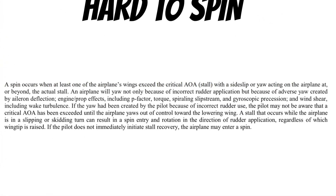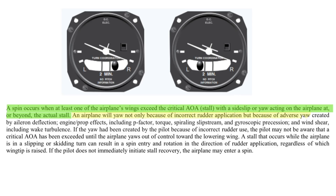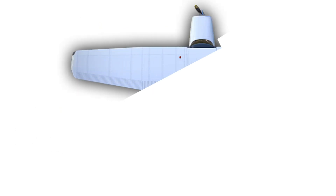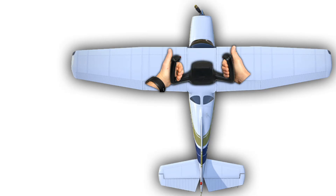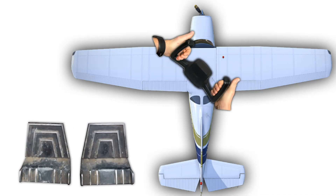Take a look at what the Airplane Flying Handbook says: 'A spin occurs when at least one of the airplane's wings exceeds the critical angle of attack, or stalls, with a sideslip or yaw acting on the airplane at or beyond the actual stall.' Now, they do go on to say that this yaw is not necessarily caused by using the rudder incorrectly — it can also be caused by not accounting for adverse yaw caused by the ailerons. That's why it's super important to always fly the aircraft as if the rudder pedals are tied to the ailerons, unless you're intentionally trying to slip the aircraft. Anytime you roll the airplane, you're creating more drag on the wing with the lowered aileron.